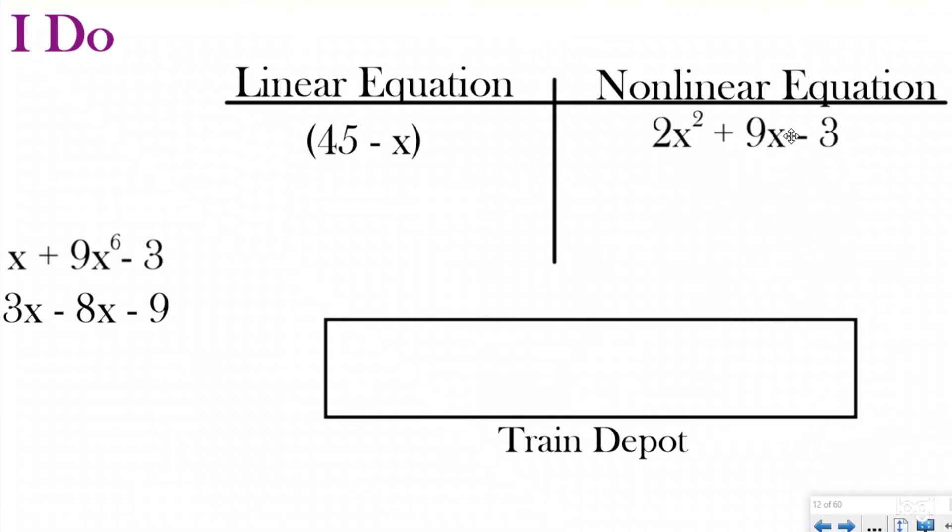This next one in the train depot is x + 9x⁶ - 3. Again, we have three different terms in our expression, and one of them is raised to a power that is 2 or greater, which means it's going to graph as a curve. So we are going to label this as a nonlinear expression.